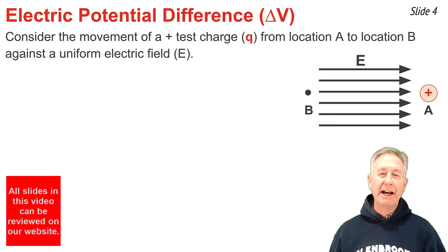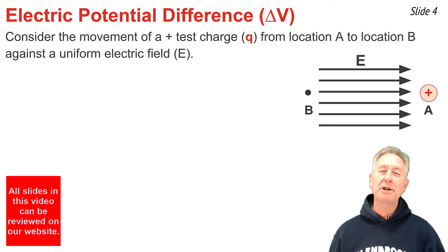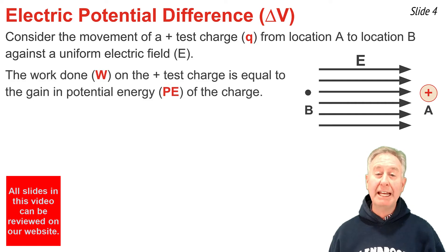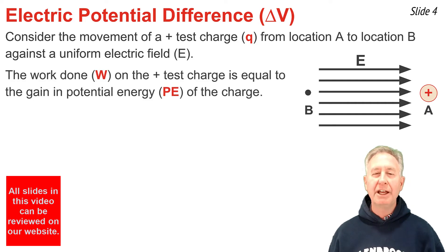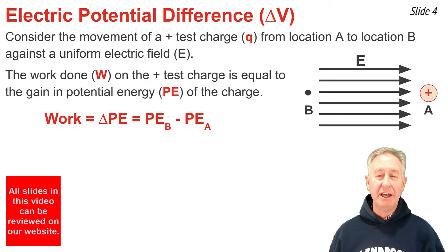Let's consider the movement of a positive test charge from location A to location B. Since this movement is in the direction that goes against the electric field, we know that work must be done by an external force to move the test charge from A to B. This means there would be a gain in potential energy of the test charge, and in fact the work is equal to this change in potential energy — the PE at B minus the PE at A.